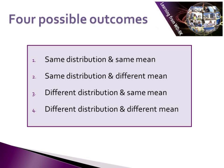So knowing we have a difference, what does it actually mean to say the averages for two groups are statistically different? There are actually four possible outcomes. The first is that they have the same distribution and the same mean. The second is that they have the same distribution but a different mean. The third is that they have a different distribution but the same mean. The fourth is that they have both a different distribution and a different mean. Each of these situations looks different and tells a very different story.